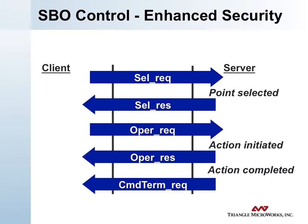Select before operate control with enhanced security closes that feedback loop. It is again a two-step process — selection and response, then an operate request and a response that the action has been initiated — but after that, a command termination is returned from the server to the client confirming the action is completed. The mental model for this is contact closure: the operate request begins the contacts moving, but the command termination signals when they have completed and are stable again.